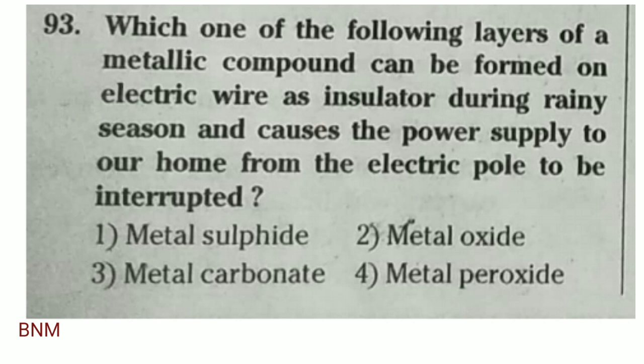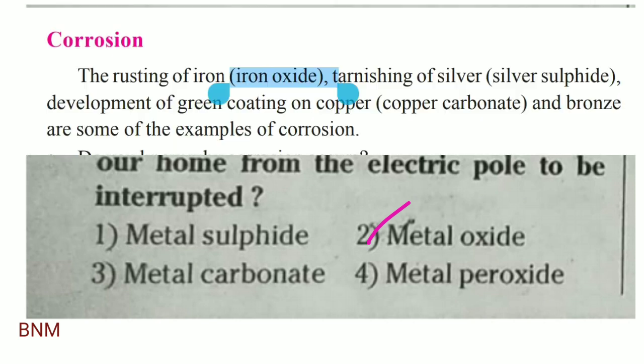Which metallic compound forms layers on electric wires as an insulator during rainy season, causing the power supply from the electric pole to our home to be interrupted? During rainy season, electric wires react — metal reacts with water and oxygen in air to form metal oxide. This process is called corrosion.